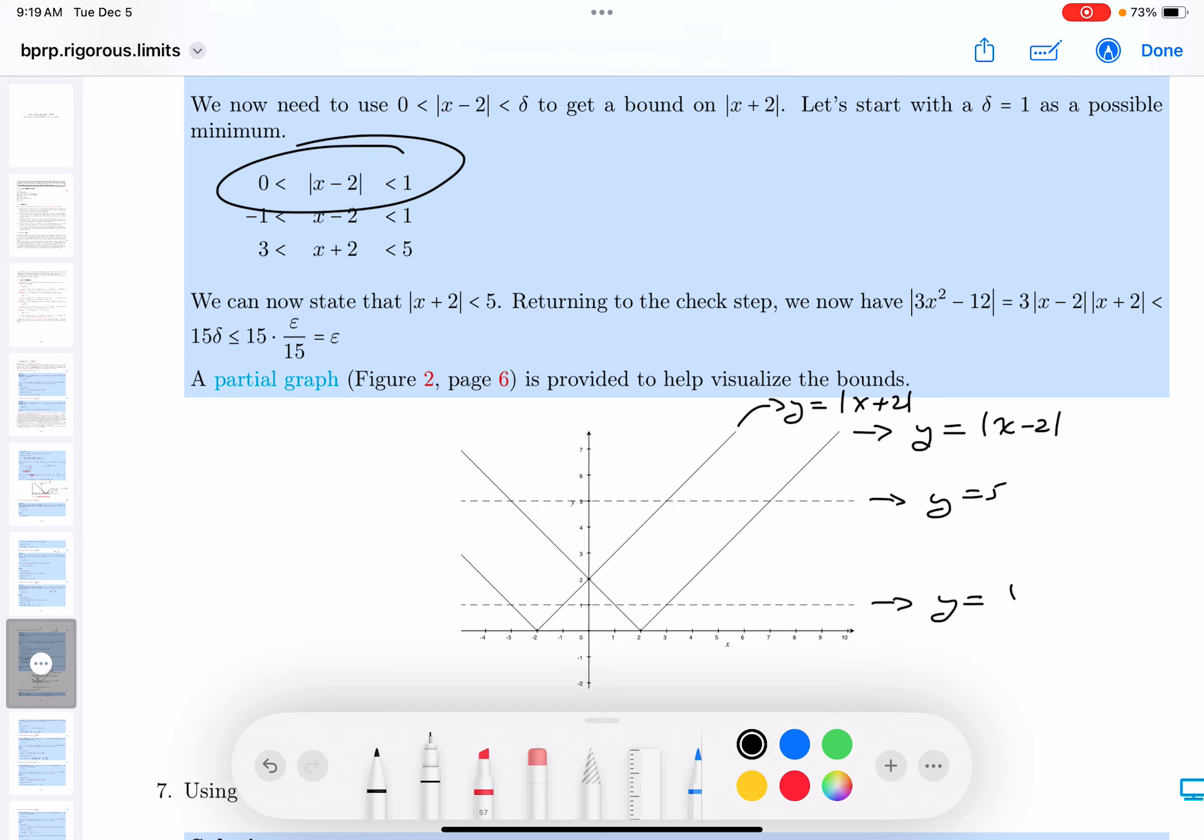What does that mean for me? It means the absolute value of x plus 2 is going to be less than 5. Alright, so we went through that when we were looking for the delta. We're looking for the delta.